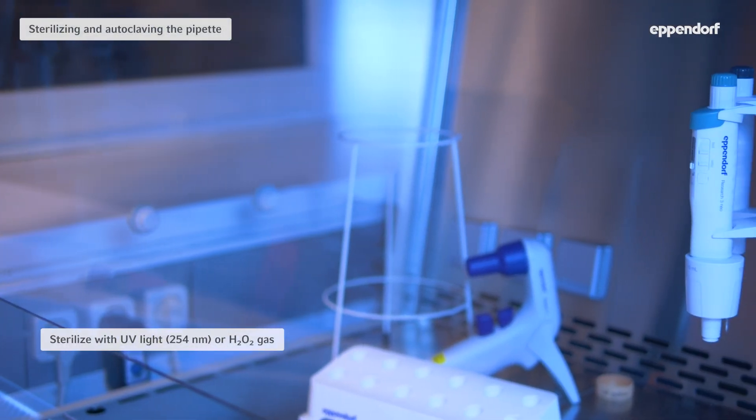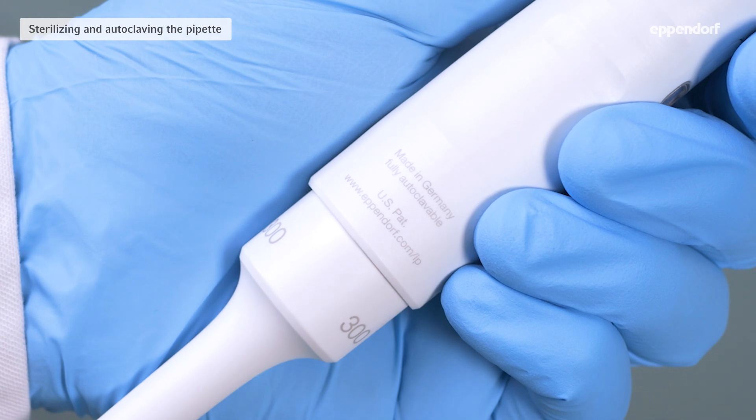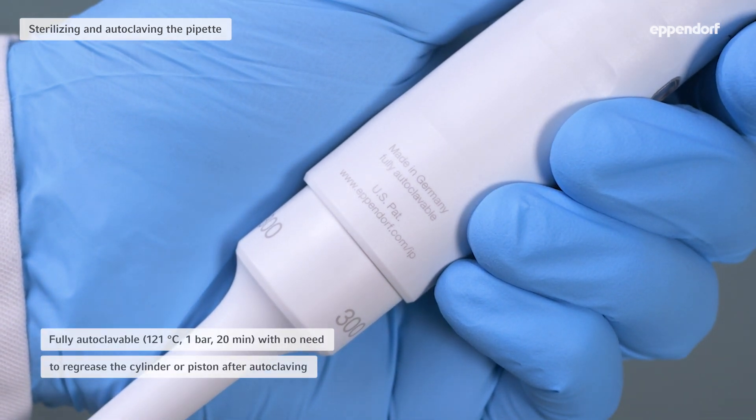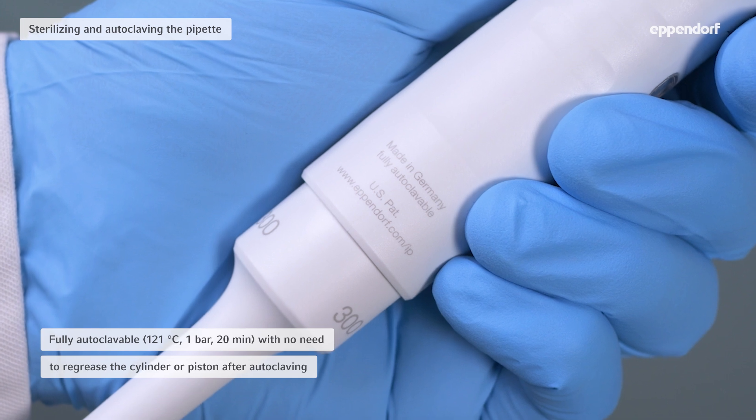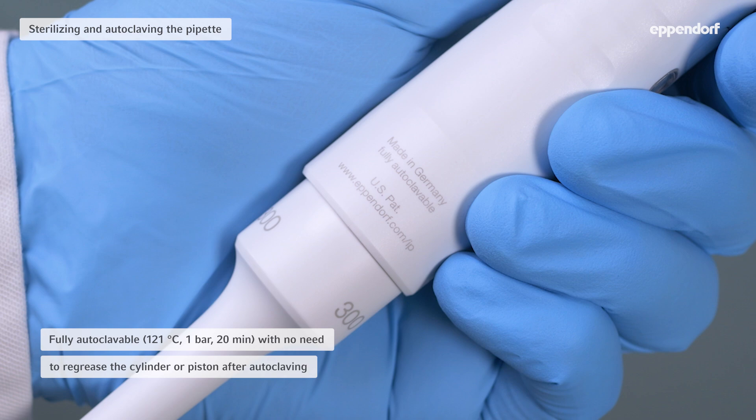You can sterilize the pipette with UV light or H2O2 gas. All Eppendorf research pipettes are fully autoclavable. Make sure to remove the protection filter of large volume pipettes before autoclaving though. You do not need to re-grease the cylinder or piston after autoclaving. Color tag marking rings are also autoclavable and UV resistant.